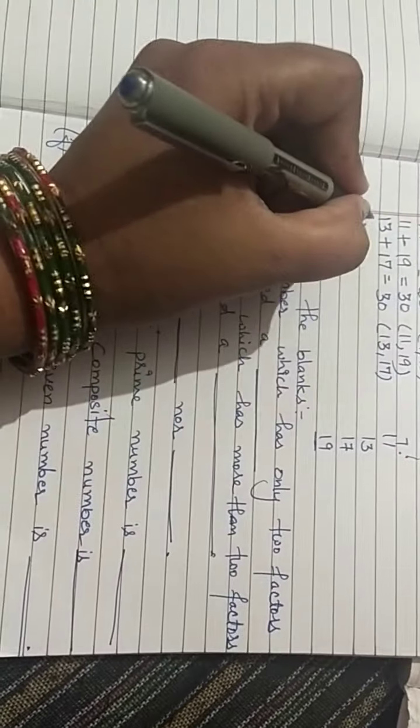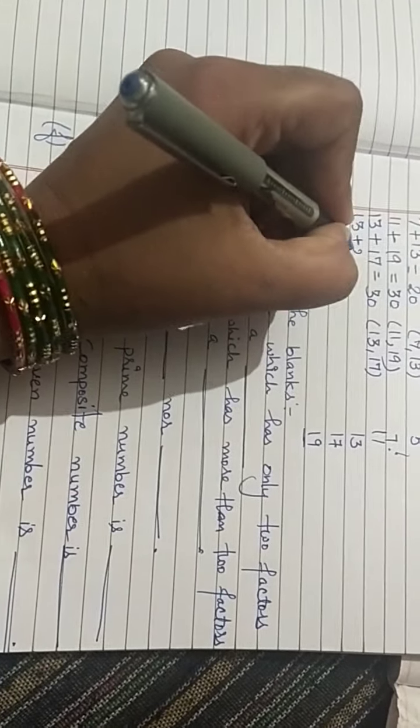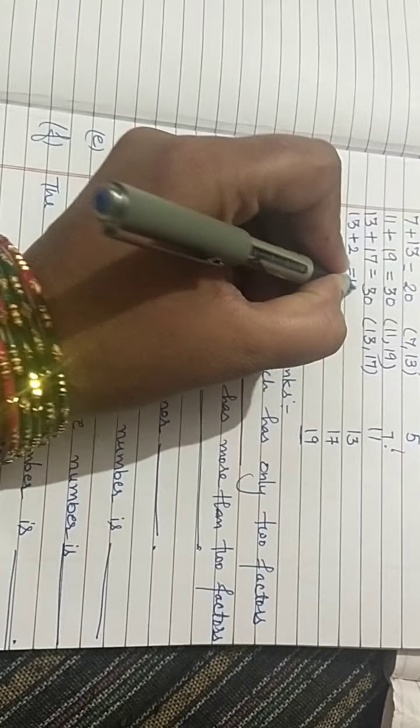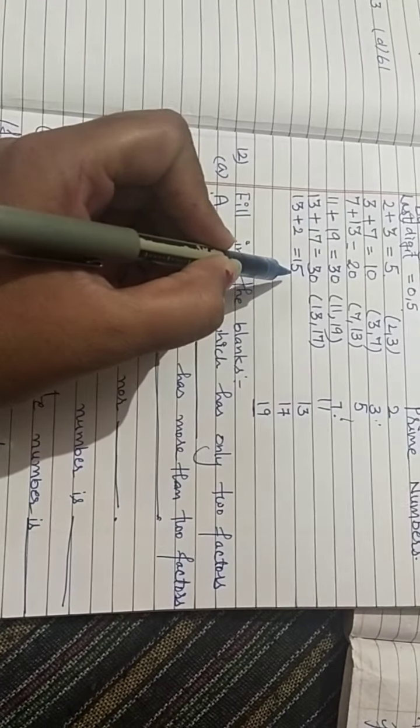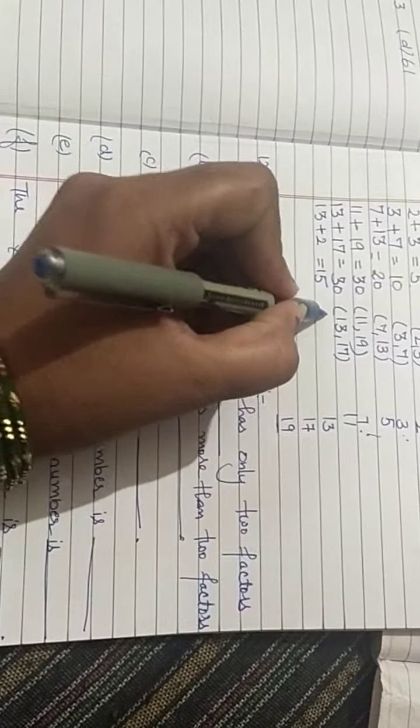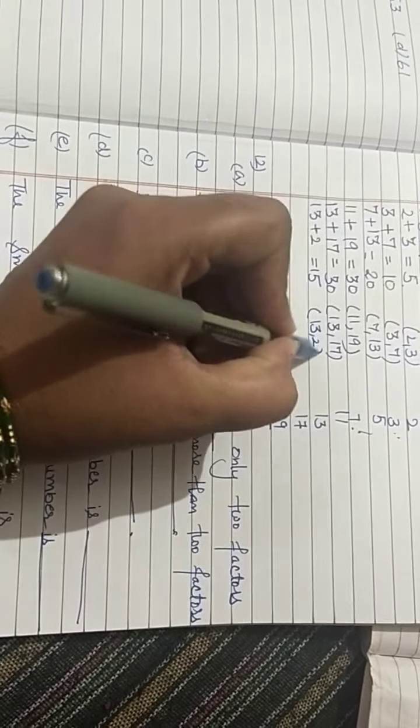Next, 13 plus 2, we get 15. It also comes in table 5. It means 13 and 2 is a pair.